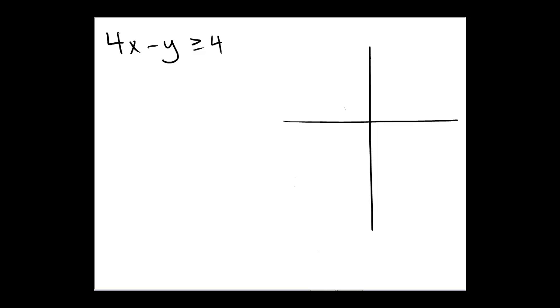Now try this one on your own. Assuming you took a chance and paused the video to try it out, let's do it together. This time, because of the standard form and the fact that the numbers are cleaner, I'm going to use the intercept method. If I let x = 0, that would give: 4(0) - y...